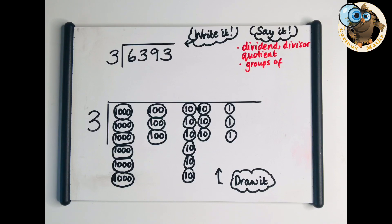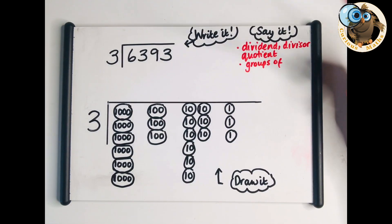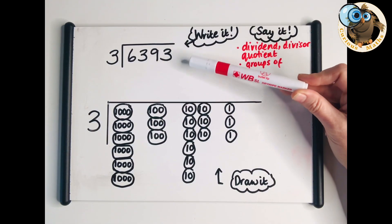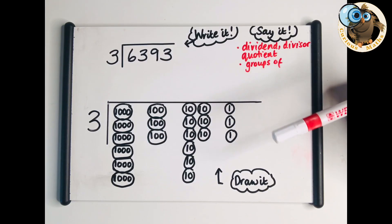It's at this stage we want to bring in a different model for working with short division and that is the grouping model. Children have had lots of experience with grouping models. They start in Year 2 to do grouping for division. Also when you think about times tables, that's groups of numbers. When we're thinking about 6,393 divided by 3, we're thinking about threes - how many threes are there in 6,393?